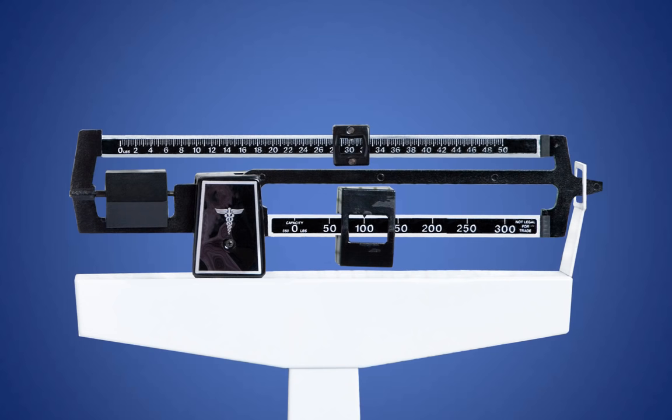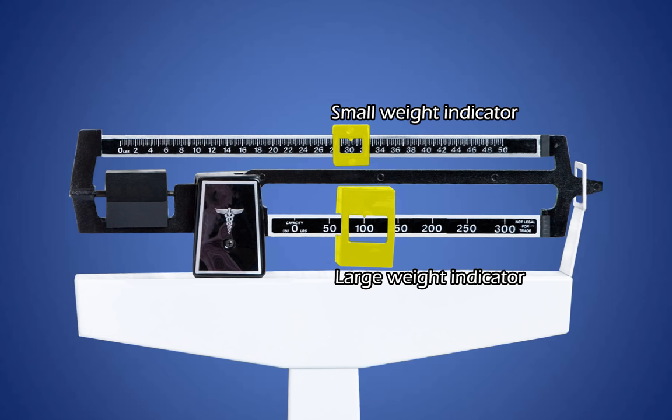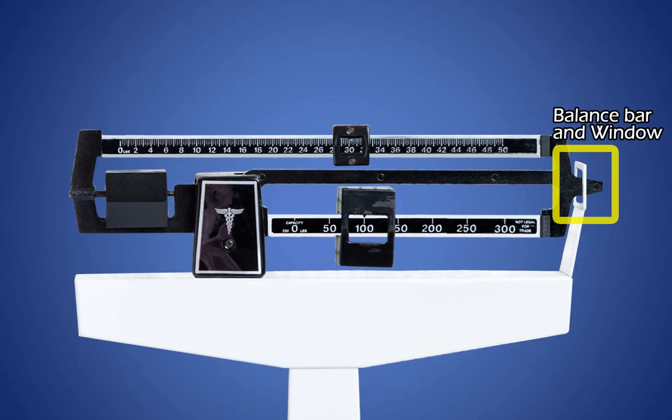The parts of the Physician Mechanical Beam Scale that we will focus on today are the balance beam which includes the upper and lower poise bars, the poise weights also known as the large weight indicator and small weight indicator, and the balance bar and window.